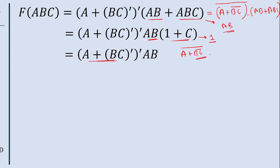For the bar term, let's consider BC bar as D, so the expression becomes A plus D, all bar. Applying De Morgan's theorem, the bar of (A plus D) equals A bar into D bar. Now replacing D with BC bar, we get A bar into (BC bar) bar.